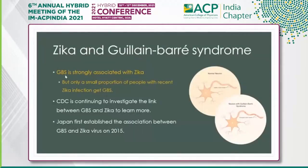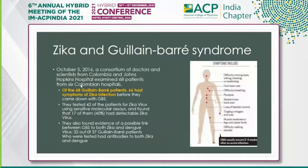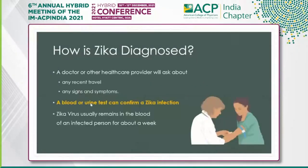Beyond microcephaly, another serious neurological complication is Guillain-Barré Syndrome (GBS), which is strongly associated with Zika. Only a small proportion of people with recent Zika infection develop GBS. The CDC is continuing to investigate this link. Japan first reported the association between GBS and Zika infection, and subsequent studies have confirmed that Guillain-Barré syndrome is a possible complication.